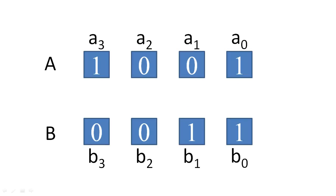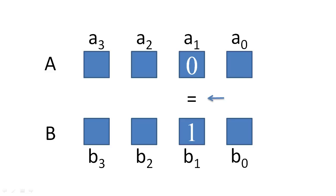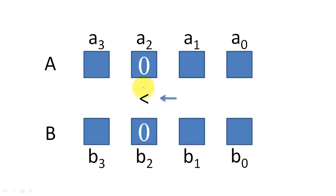If we start with the least significant bits, their comparison will show that the two numbers are equal. When we compare the next most significant bits, we see that the most significant bit of A is less than the most significant bit of B, so A is less than B at this point in the comparison. When we compare the next most significant bits, these bits are equivalent, so we must look at the past comparisons to figure out the relationship of A and B. Because previous comparisons have found that A is less than B, A is less than B throughout this part of the comparison.